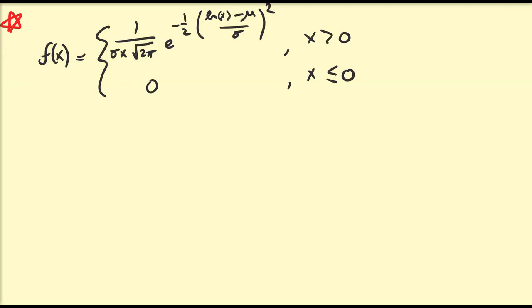Hello there. In this video we're going to introduce a new type of probability density function known as the log normal distribution, which has the density function given above. We're going to describe properties of this distribution, go into Desmos and look at a couple graphs, calculate probabilities and expected values, standard deviations of it, and also explain a couple of types of random variables that actually might have this type of distribution associated to it.